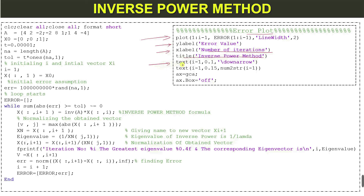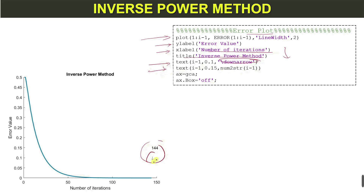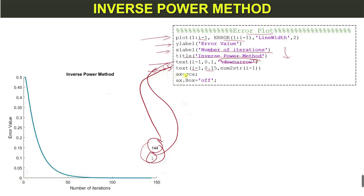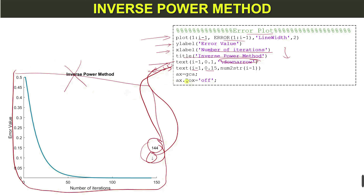To annotate the graph, we draw an arrow using a specific command, and display the number of iterations at a given x and y position on the plot. Finally, we set ax = gca and turn off the box around the axes using ax.Box = 'off', removing the rectangular border from the figure.